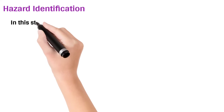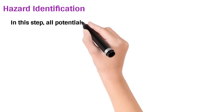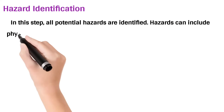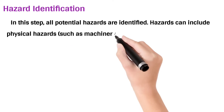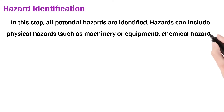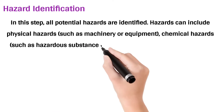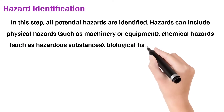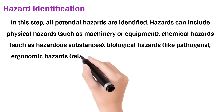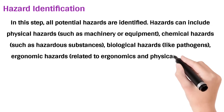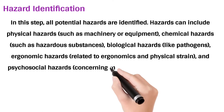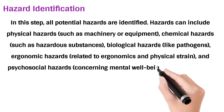Hazard Identification: In this step, all potential hazards are identified. Hazards can include physical hazards such as machinery or equipment, chemical hazards such as hazardous substances, biological hazards like pathogens, ergonomic hazards related to ergonomics and physical strain, and psychosocial hazards concerning mental well-being.